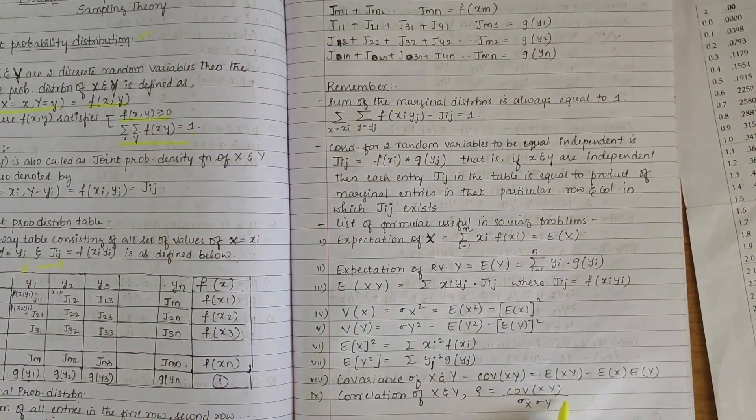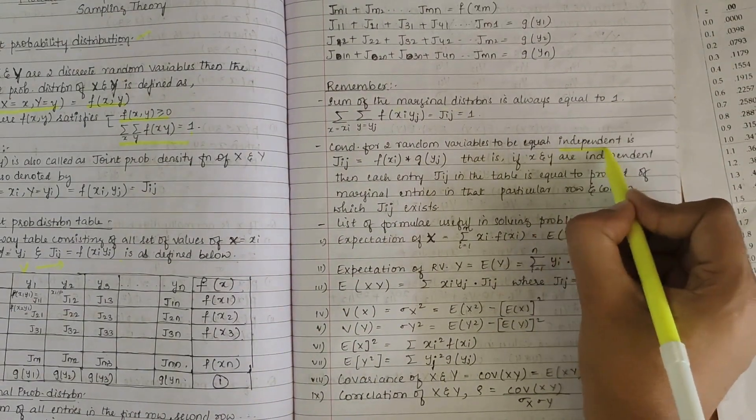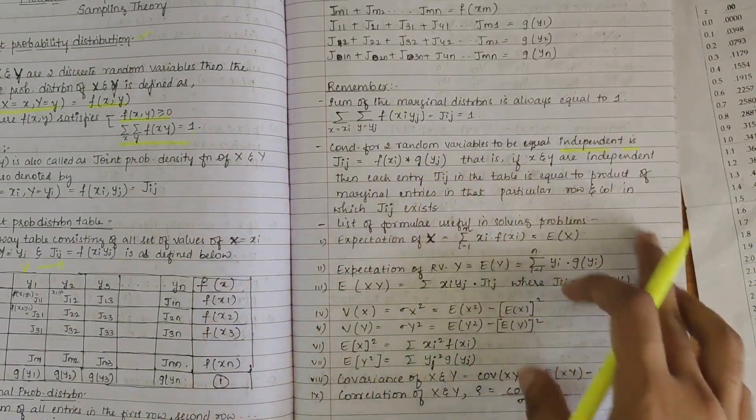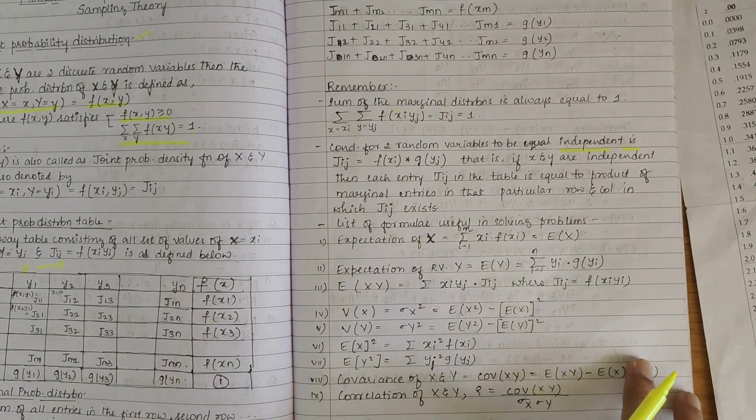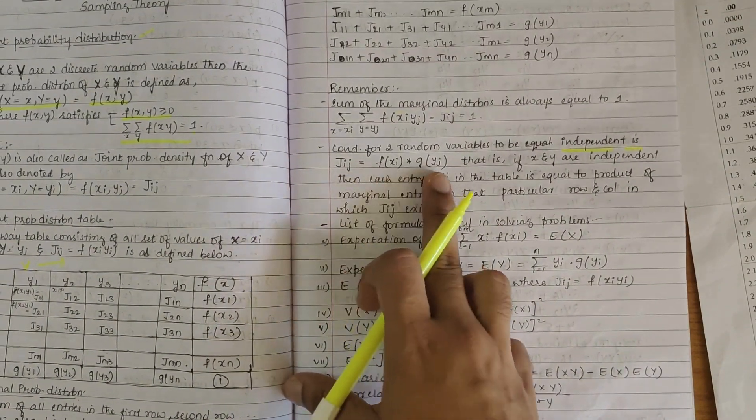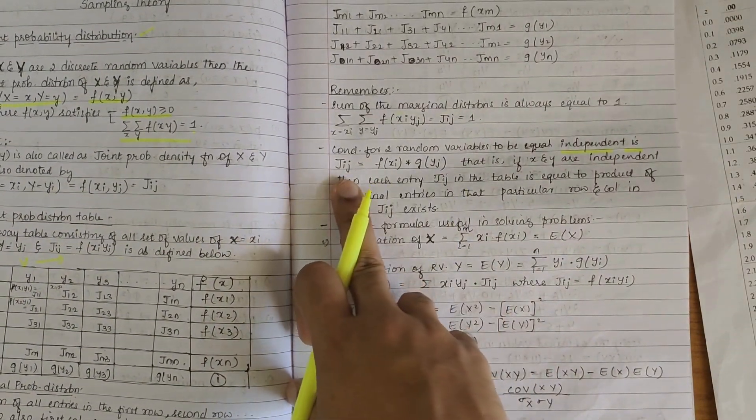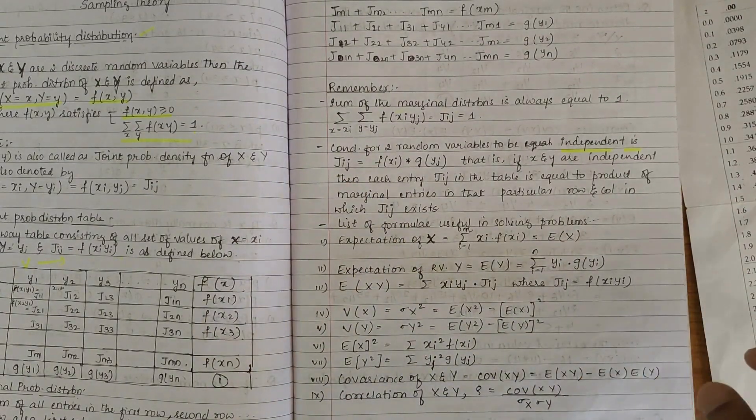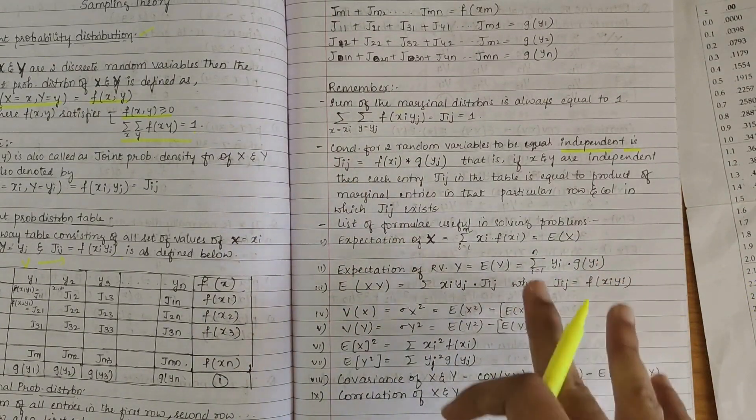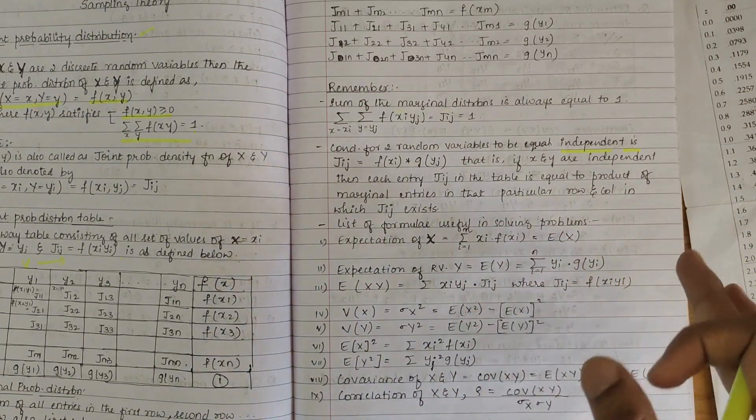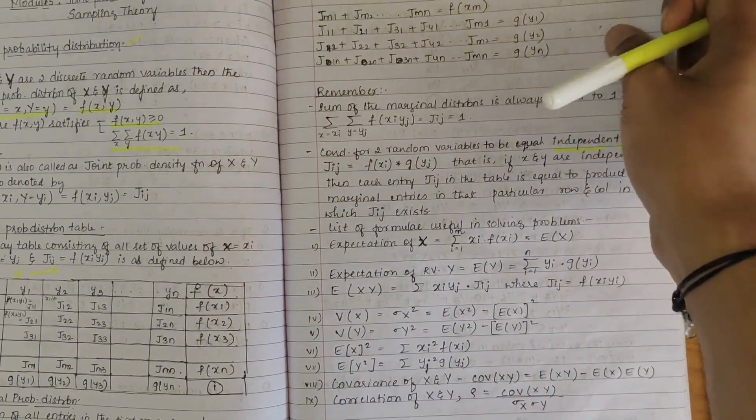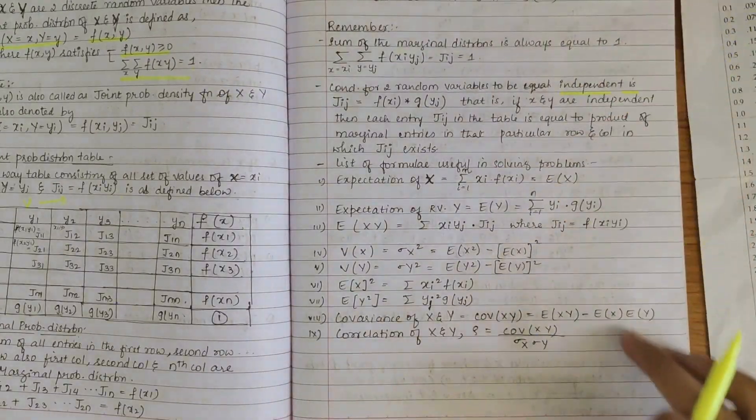And then we have a condition for variables to be independent. So if the variables are independent, then f(Xi) into g(Yi) should be equal to j(i,j). In the further examples we'll understand how this independent rule works. Then we have to move on to the important set of formulas required for this module.